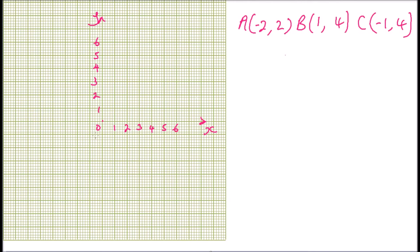On the other side we have minus 1, minus 2, minus 3, minus 4, minus 5. We now plot triangle ABC. A is at (-2, 2), B is at (1, 4), and C is at (-1, 4). With those three points we join them to form triangle ABC.